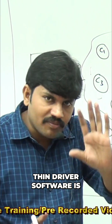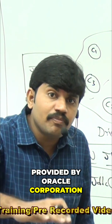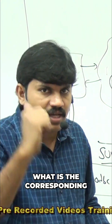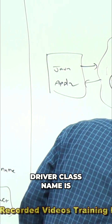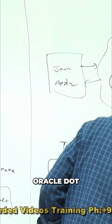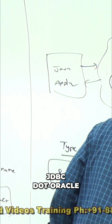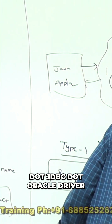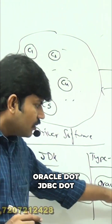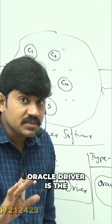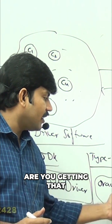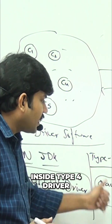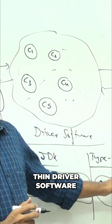Type 1 driver of Oracle, which is also known as ThinDriver. ThinDriver software is provided by Oracle Corporation to communicate with Oracle Database. The corresponding driver class name is oracle.jdbc.OracleDriver. This is the driver class name present inside Type 4, or ThinDriver, software.